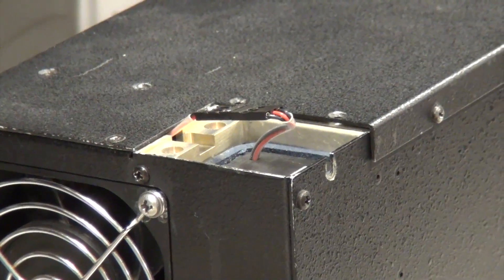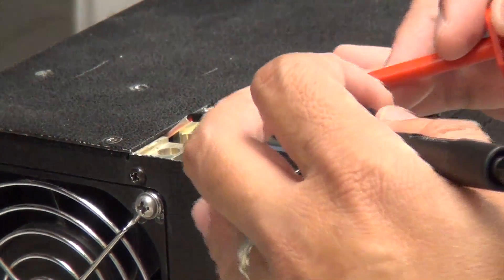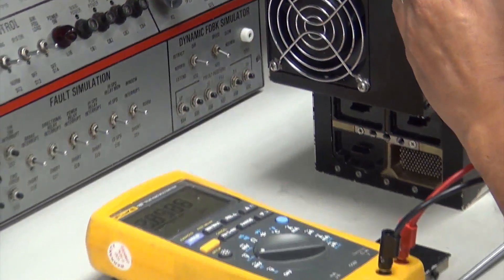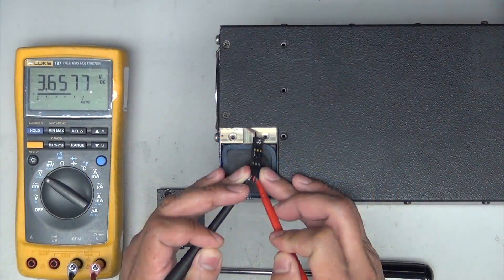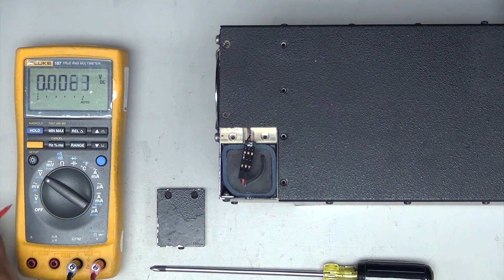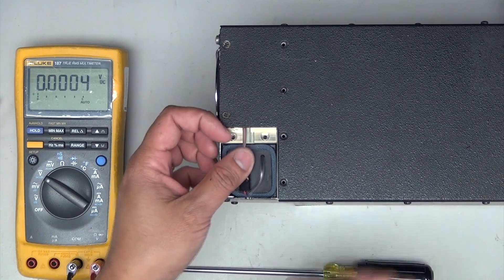Check and record the replacement battery voltage by probing the pins at the connector. The battery voltage reading should be more than 2.4 volts DC.